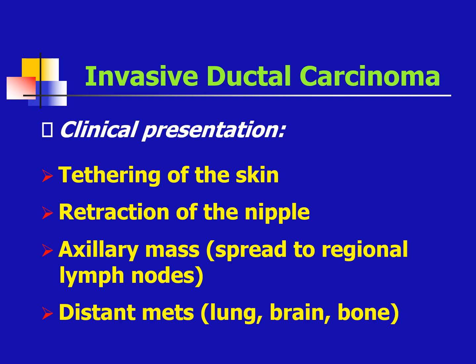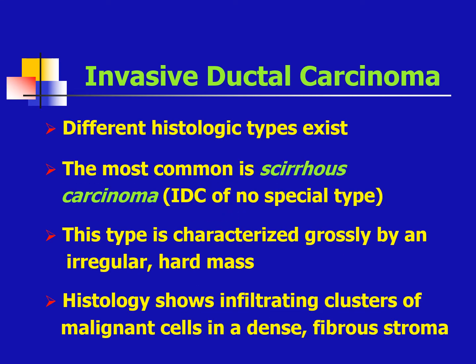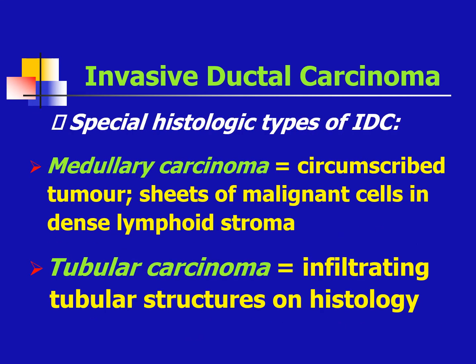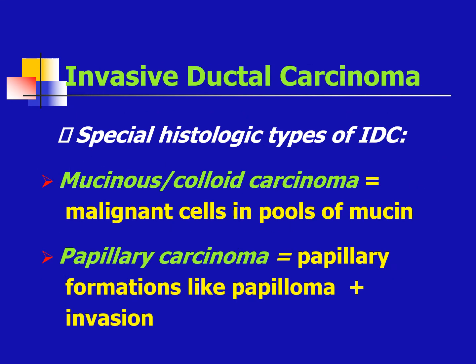Note the site of metastasis because invasive lobular carcinoma metastasizes to different areas. Invasive ductal carcinoma has different histologic types. The most common is scirrhous carcinoma — invasive ductal carcinoma of no special type — characterized grossly by an irregular hard mass with infiltrating clusters of malignant cells in a dense fibrous stroma. Special types would be medullary carcinoma, tubular carcinoma, mucinous colloid carcinoma, and papillary carcinoma.